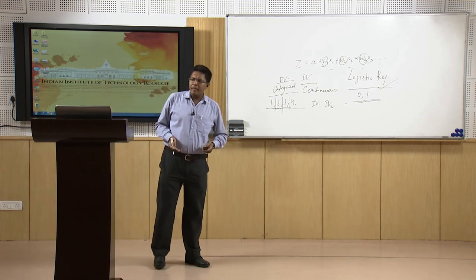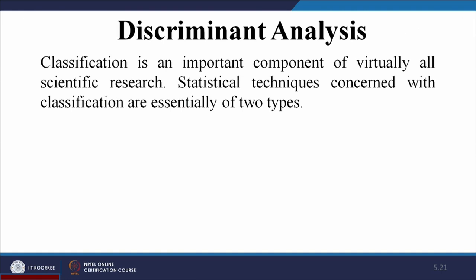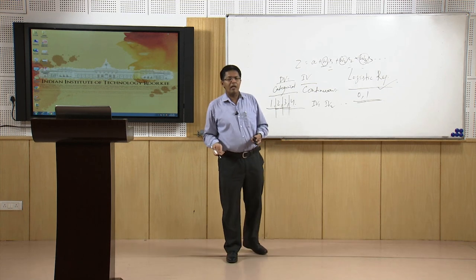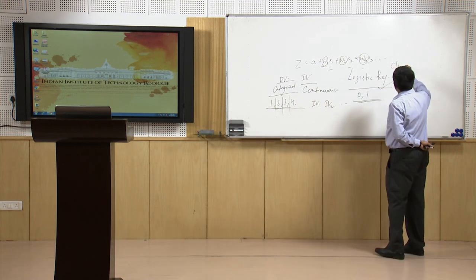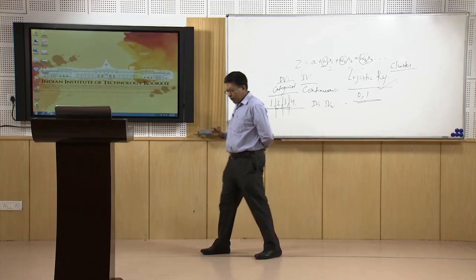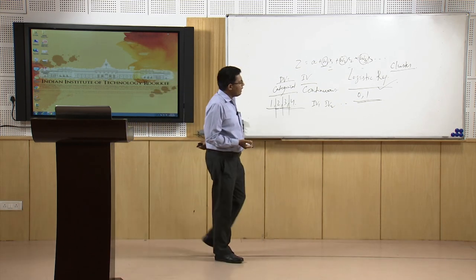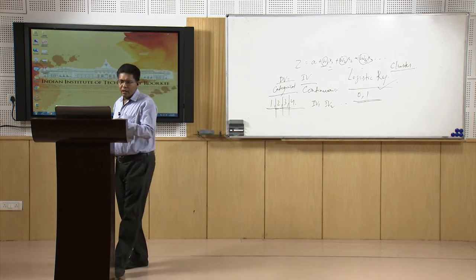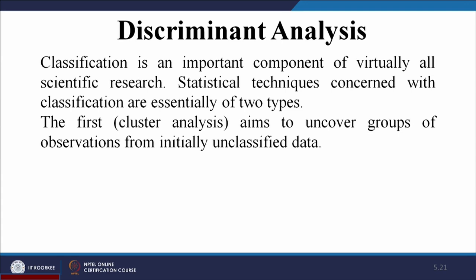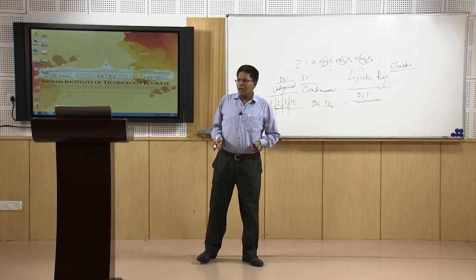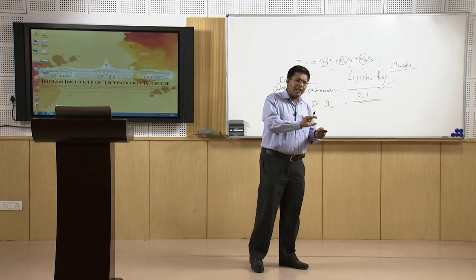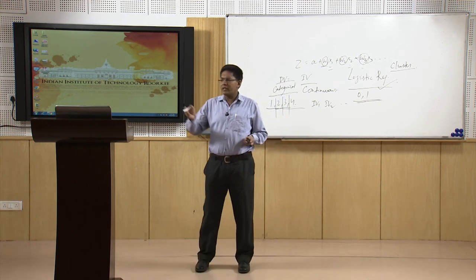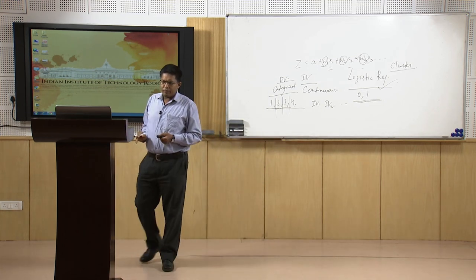The two key questions are: do the five measurements discriminate between the two assumed groups of skulls, and can they be used to produce a useful rule for classifying other skulls that might become available? Discriminant Analysis helps in classification, but it differs from Cluster Analysis. Cluster Analysis uncovers groups — it develops groups from initially unclassified data. Discriminant Analysis, on the other hand, derives rules based on already classified data and places individuals into the right group according to their features.